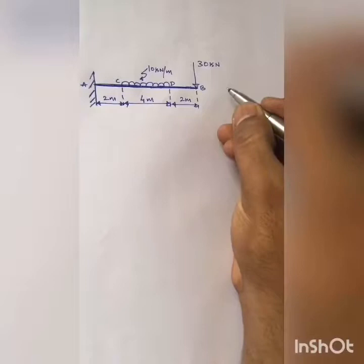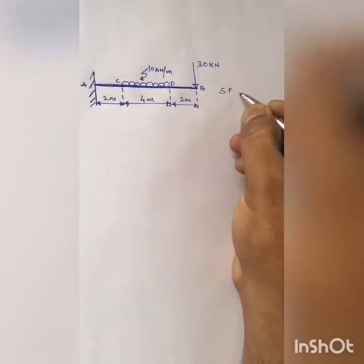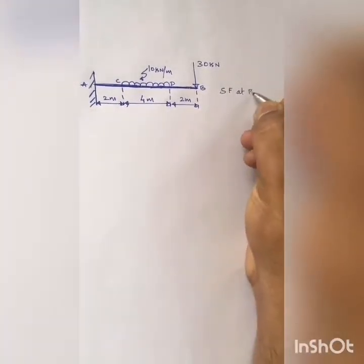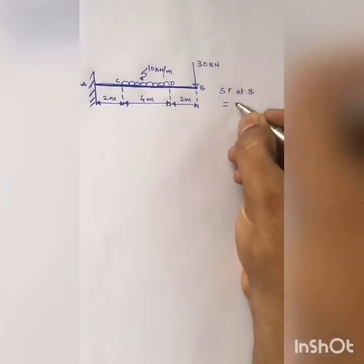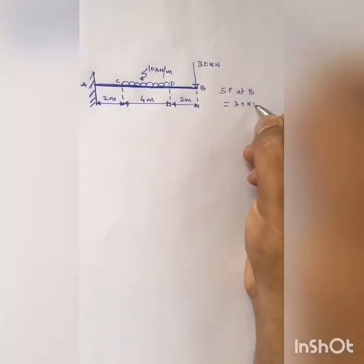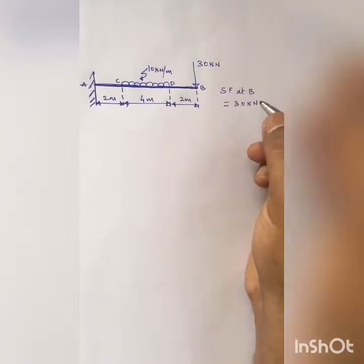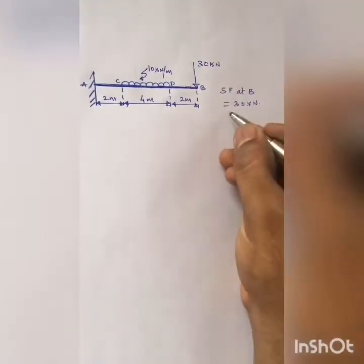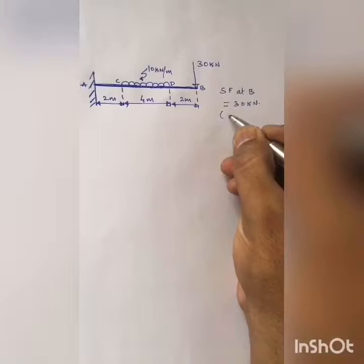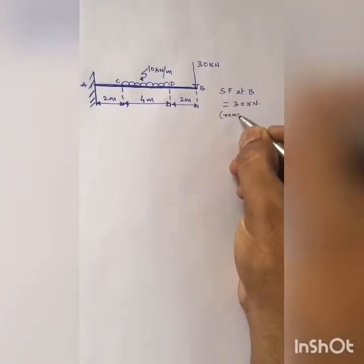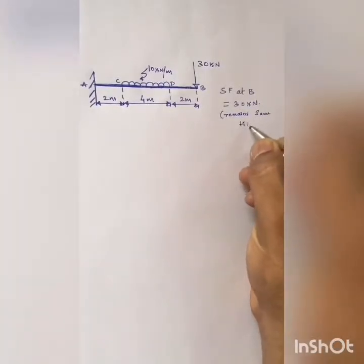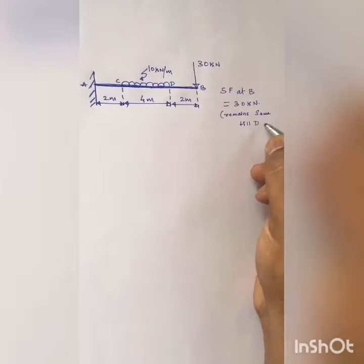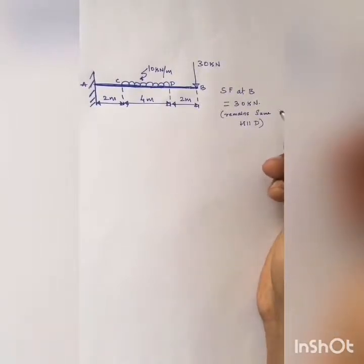Let us start finding the shear forces at various salient points. We will start from the rightmost end to the leftmost end, that is from point B to point A. Shear force at point B is 30 kilo Newton and it is positive because it is on the right side and acting downwards. It remains the same till point D, so we will have a constant straight line from point B to D.